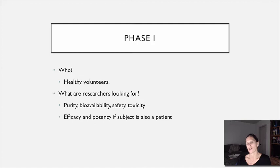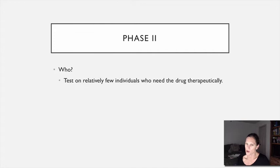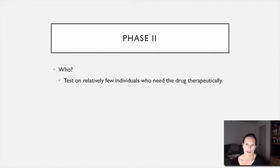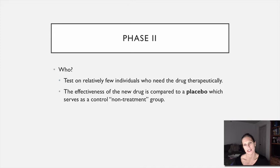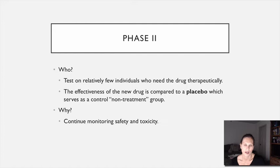Phase 2 human clinical trials are still relatively small and short, because we haven't given this drug to very many people yet. However, now the people receiving the drug actually have the condition it's supposed to treat. This allows us to look at efficacy — does it work compared to a placebo? The control group gets a placebo, and we compare responses. In addition to efficacy, we also gather more information on safety, potential toxicity, and potency.